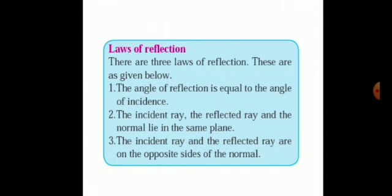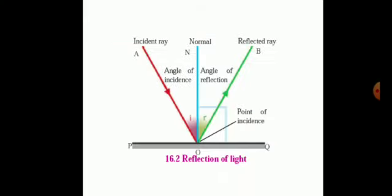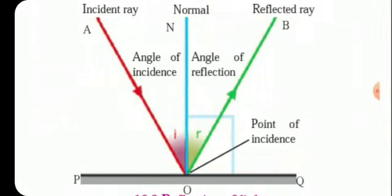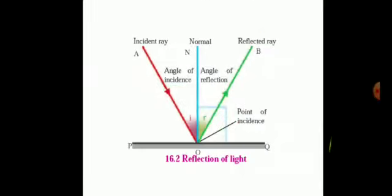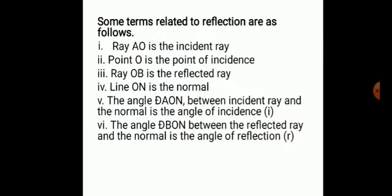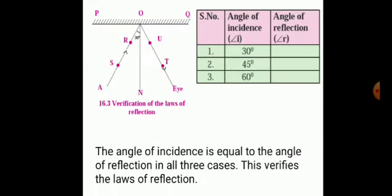There are three laws of reflection. First: the angle of reflection is equal to the angle of incidence — angle I equals angle R. Second: the incident ray, the reflected ray, and the normal lie in the same plane. Third: the incident ray and the reflected ray are on the opposite sides of the normal. If the angle of incidence is 30 degrees, then the angle of reflection will also be 30 degrees.